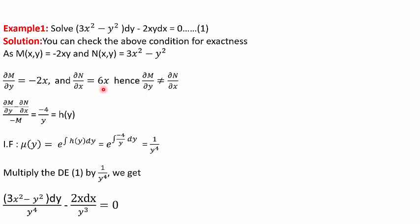We try Case 2: dividing by minus M, where -M = 2xy. The difference del M by del y minus del N by del x was -8x. Dividing -8x by 2xy gives -4/y, a function of y. The integrating factor is mu(y) = e to the power of the integral of h(y) dy, which gives us 1/y⁴. So mu(y) = 1/y⁴. Multiply the whole differential equation by this integrating factor.